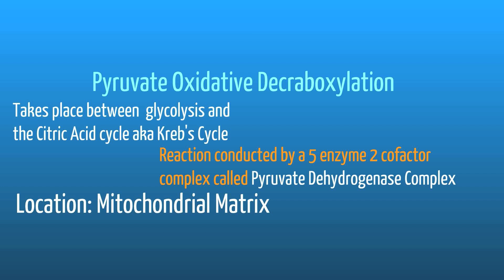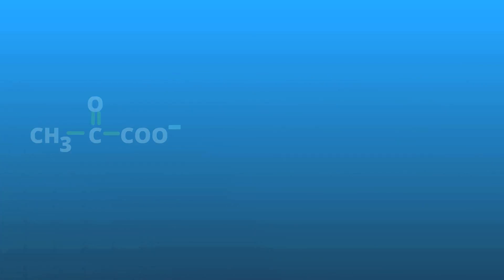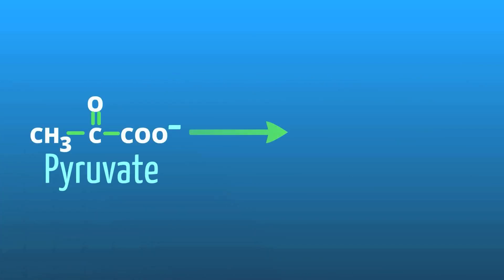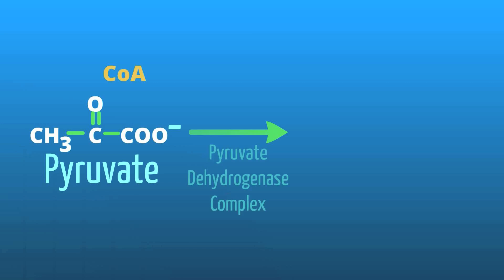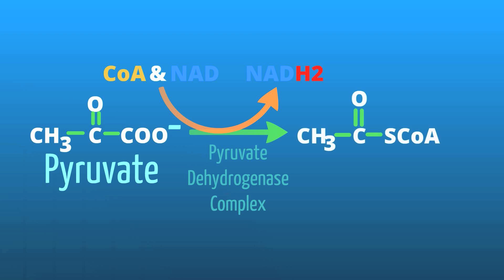Three of these enzymes are involved in the actual reaction, and two are regulatory enzymes. The pyruvate produced in the cytoplasm after glycolysis is transported into the mitochondrial matrix, where pyruvate decarboxylation occurs. Here we have the overall step: a pyruvate molecule undergoes successive small reactions that form acetyl-CoA, which is used in the Krebs or citric acid cycle.